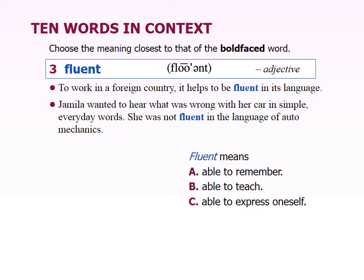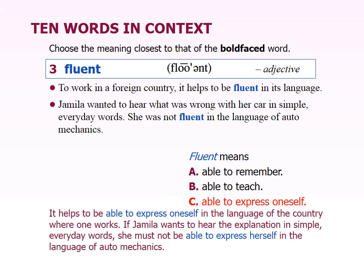Number three is fluent. 'To work in a foreign country, it helps to be fluent in its language.' 'Jamila wanted to hear what was wrong with her car in simple, everyday words — she was not fluent in the language of auto mechanics.' And fluent means able to express oneself. We use fluent a lot when talking about languages, and one of the things you're trying to do is become more fluent in English. The definition on page 51 is number nine: able to express oneself with skill and ease. So being fluent is not just that you can communicate, but that you can communicate easily.